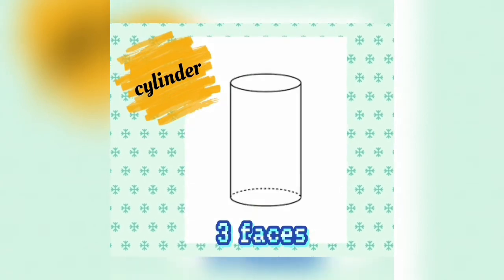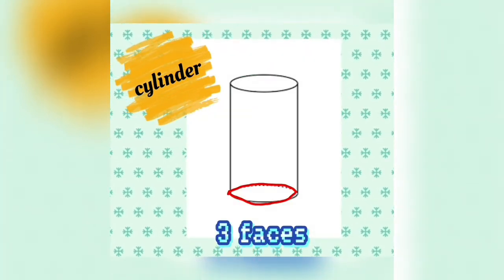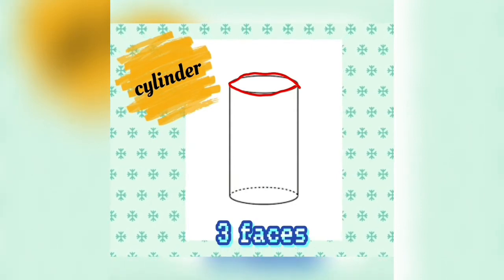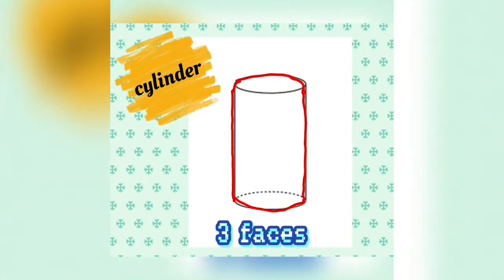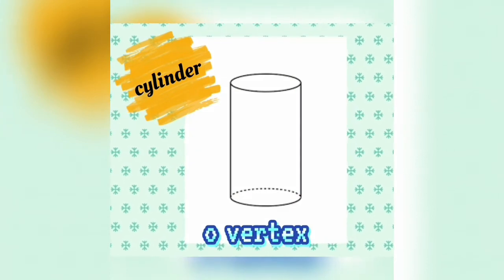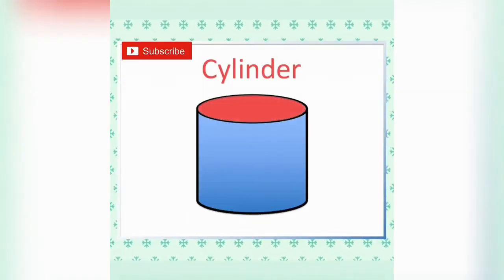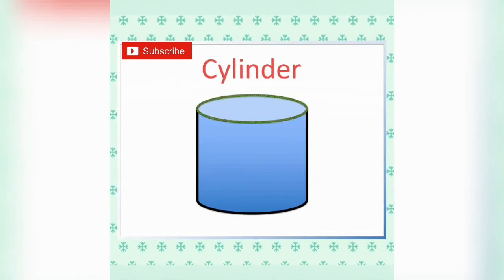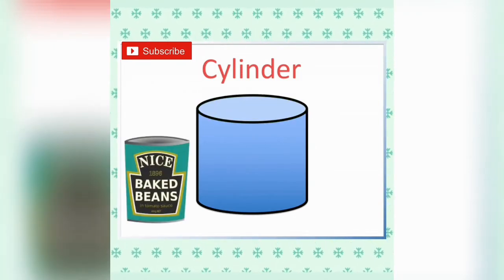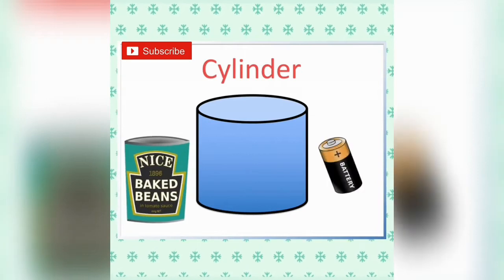It has three faces — one, two, three. Zero vertices. Examples of cylinder objects: tin can and battery.